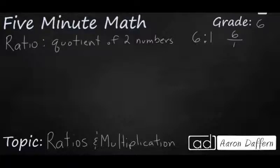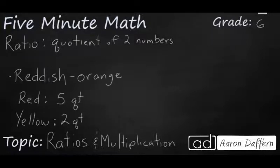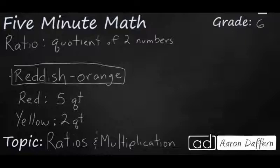Now let's see what that looks like if we're using it in a real-world situation. Let's say, for example, you're painting a wall and there's a specific color that you want. It's a reddish orange and it is made up of a ratio of 5 to 2. Meaning for every 5 quarts of red paint you use 2 quarts of yellow paint.